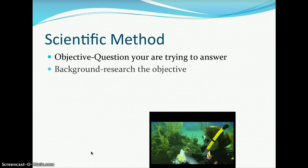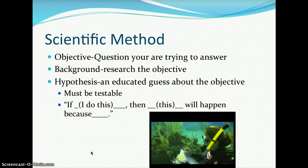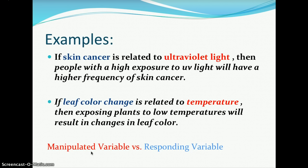In the scientific method, the objective is the question you are trying to answer. You then do background research on the objective and develop your hypothesis — an educated guess about the objective. A key thing about a hypothesis is that it must be testable. You write it in the form: if I do this, then this will happen, because... For example, if skin cancer is related to ultraviolet light, then people with high exposure to UV light will have a higher frequency of skin cancer. Or, if leaf color change is related to temperature, then exposing plants to low temperatures will result in changes in leaf color. Both hypotheses contain the manipulated variable, the responding variable, and a prediction, and both are testable because you're testing only one variable.